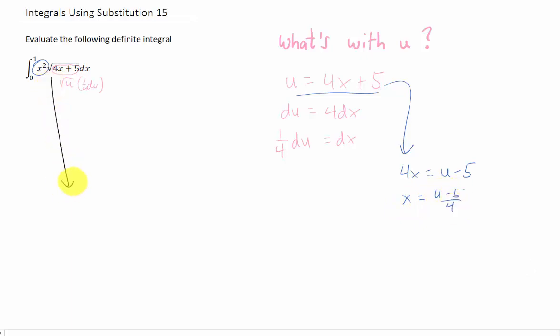Let's see what happens to our integral if we use those substitutions. We'll talk about limits in a second. The x squared turns into a u minus 5 over 4 squared, and as we said before, this next term turns into a square root of u, and the dx turns into a 1 4th du. The question now is, can we integrate this? And I think that we can.